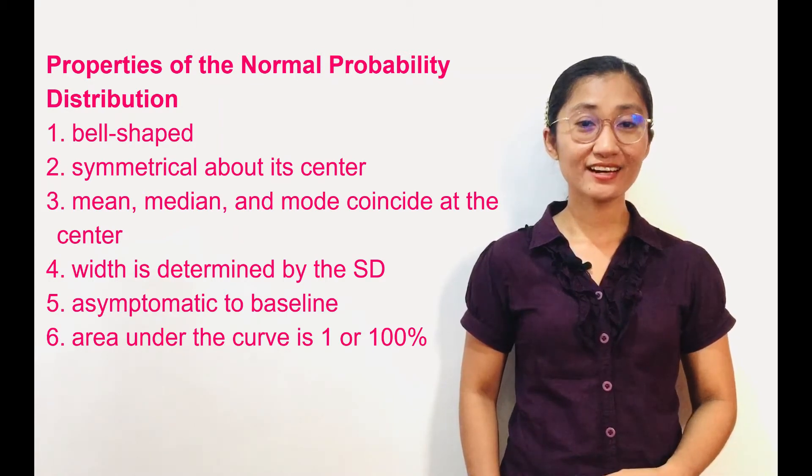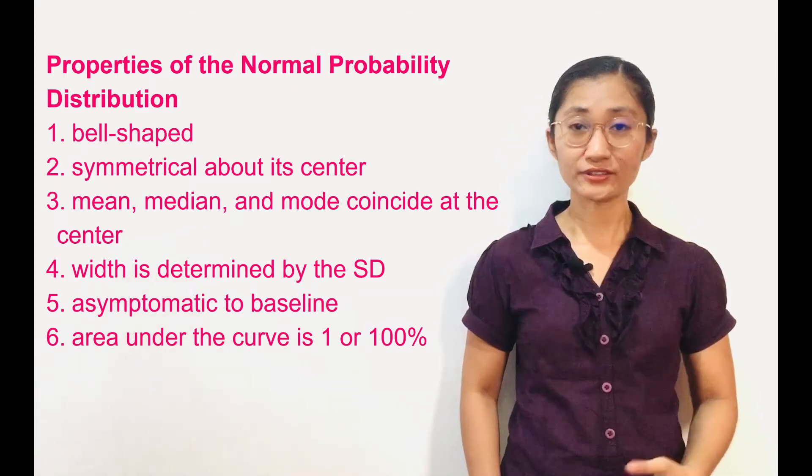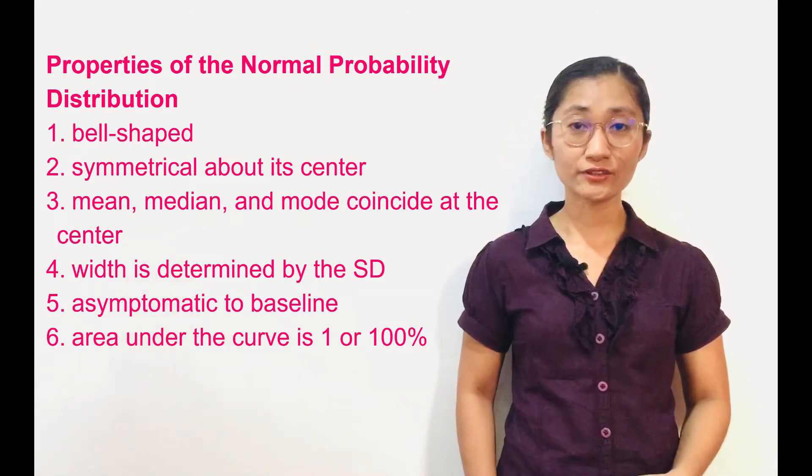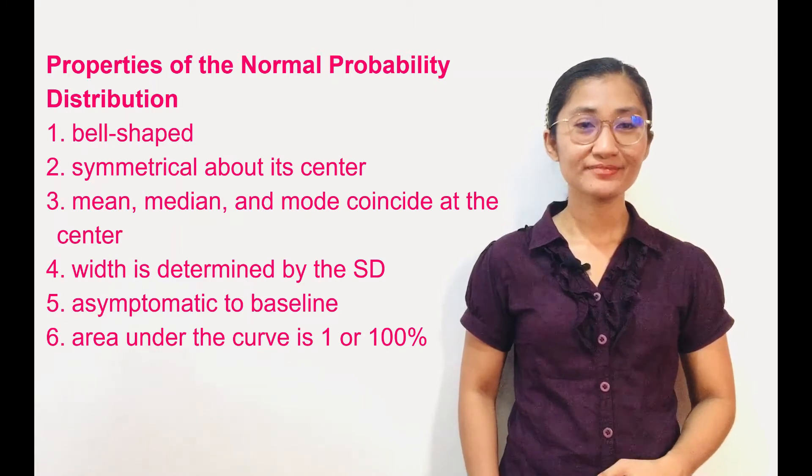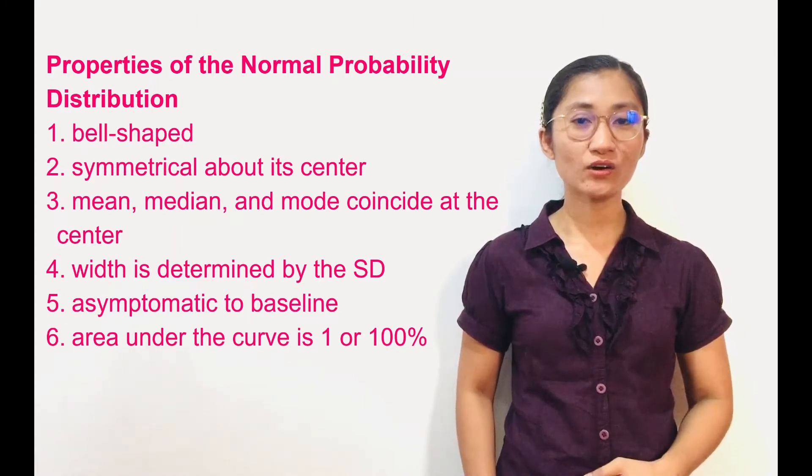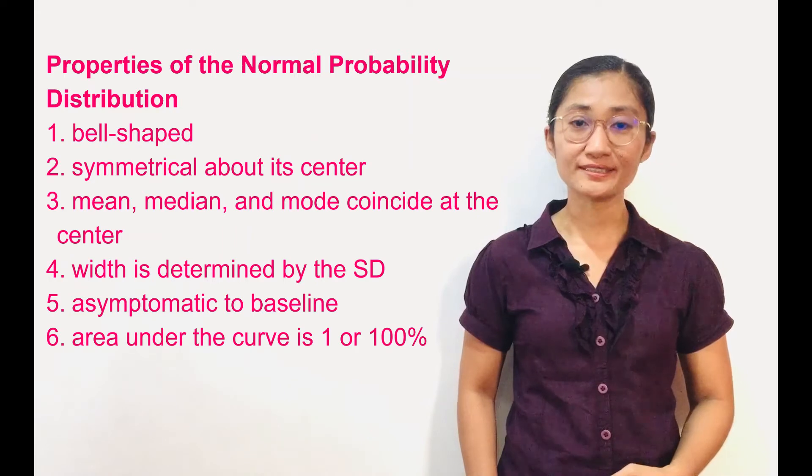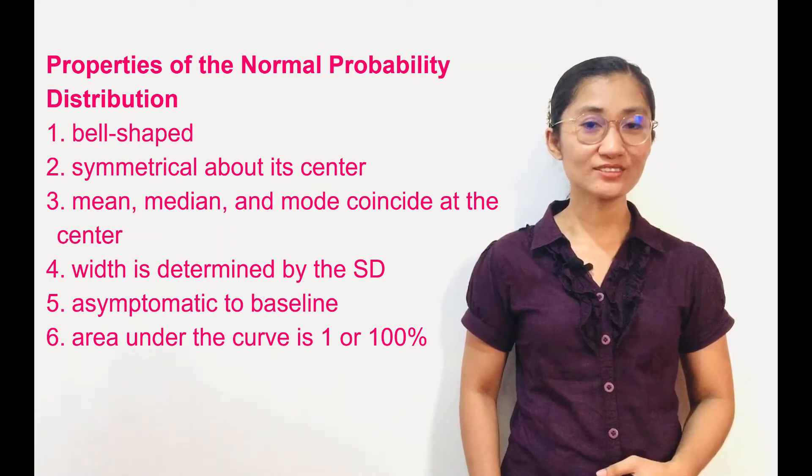Lastly, the area under the curve is 1 or 100%. It represents the probability, or proportion, or percentage with corresponding sets of parameters.